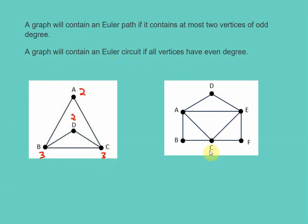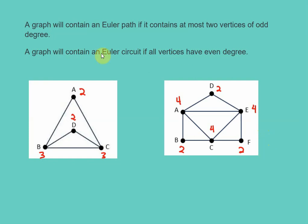Let's look at this other diagram. Vertex B has a degree of two, vertex A has a degree of four, vertex D has a degree of two, vertex E has a degree of four, vertex F has a degree of two, and vertex C has a degree of four. So all of the vertices have an even degree, which means this diagram would have both an Euler path and an Euler circuit — it has at most two vertices with odd degrees (none here), and all vertices have even degrees.